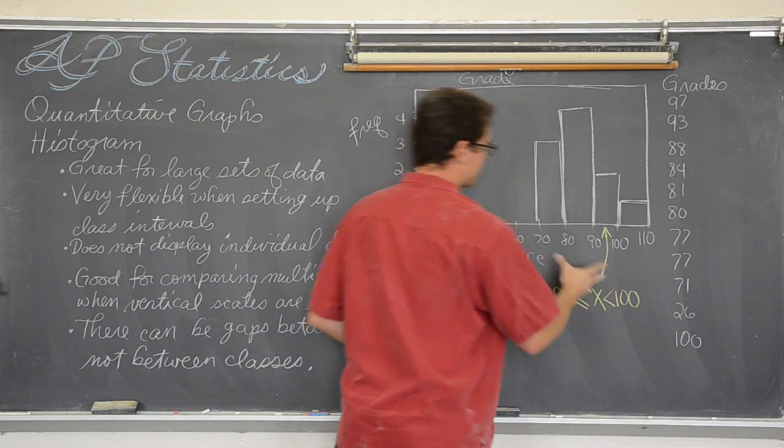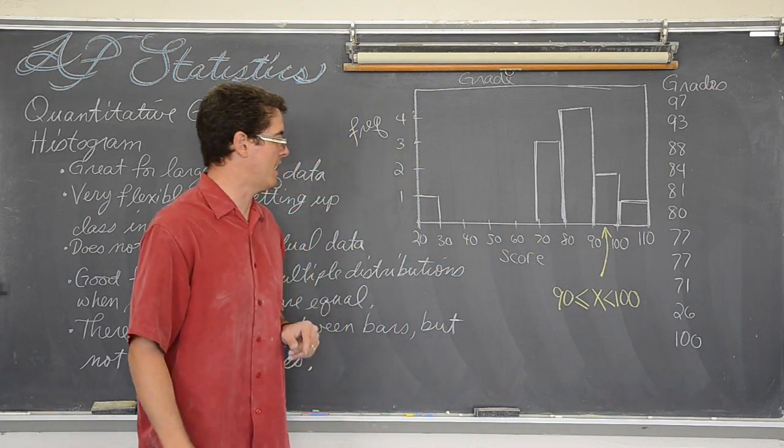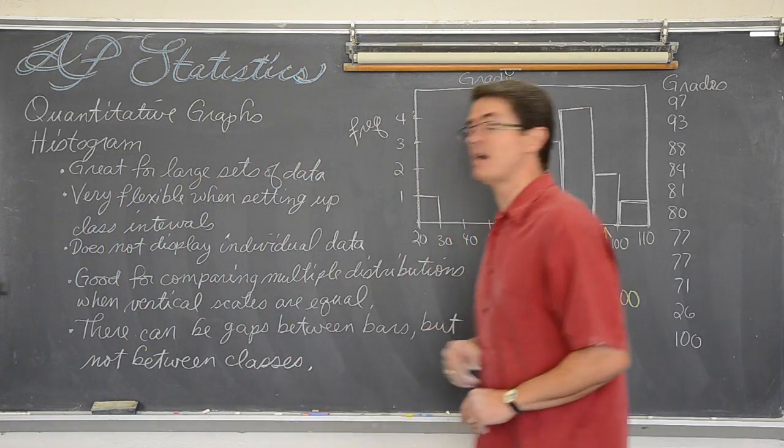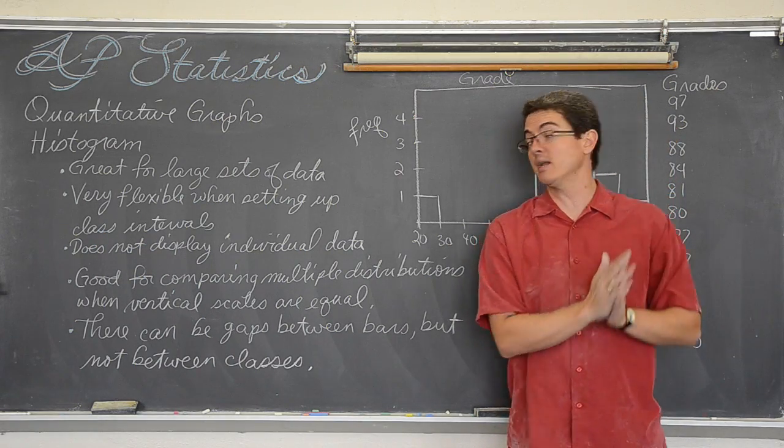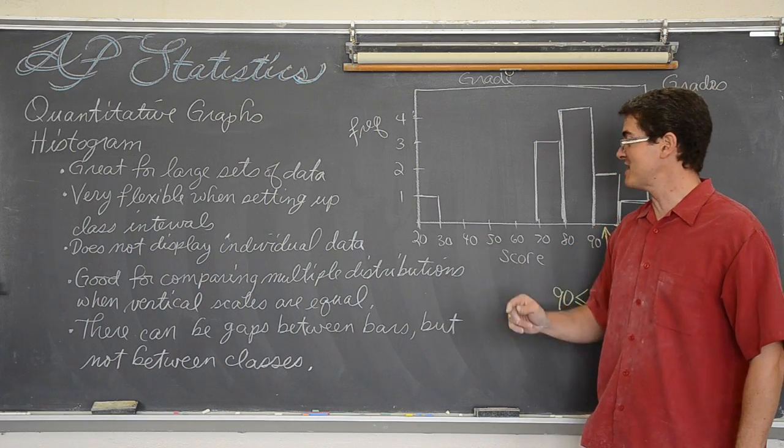Okay, this is how you read the class intervals of a histogram. You might notice my footnote. There can be gaps between the bars, but not between the classes. When you make a bar graph, all the bars have gaps in between them. Well, we have a big old gap here because of the outlier. That kid that still hasn't made up his test. There are three, four empty class intervals.